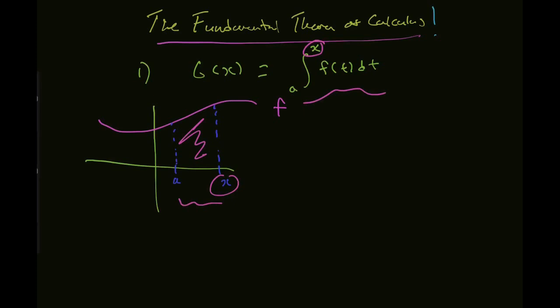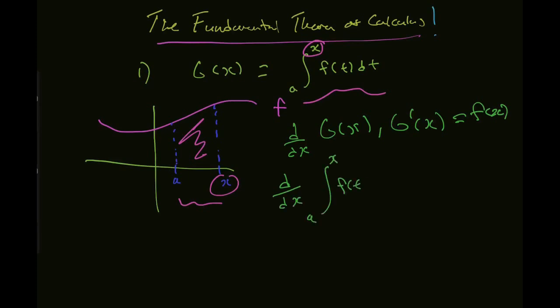What the fundamental theorem of calculus part one says is that the derivative with respect to x of g of x — or g prime of x — is actually equal to f of x. So d/dx of the integral from a to x of f of t dt is equal to f of x. Right here we have the first link between integration and differentiation. The derivative — the instantaneous rate of change — of the function that takes in x and puts out the area under the graph of f from a to x, is f of x, the original function whose graph we're using.